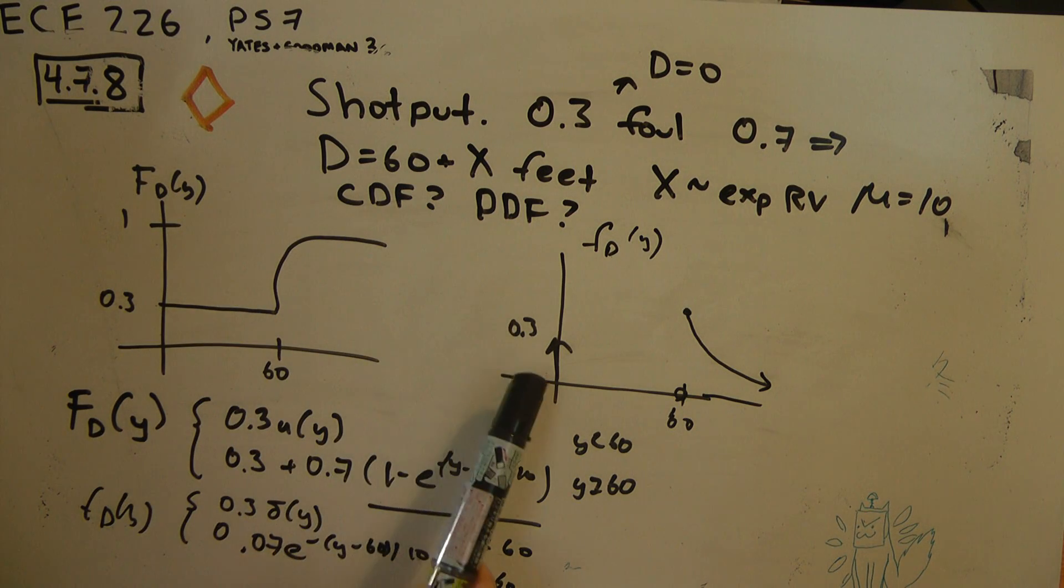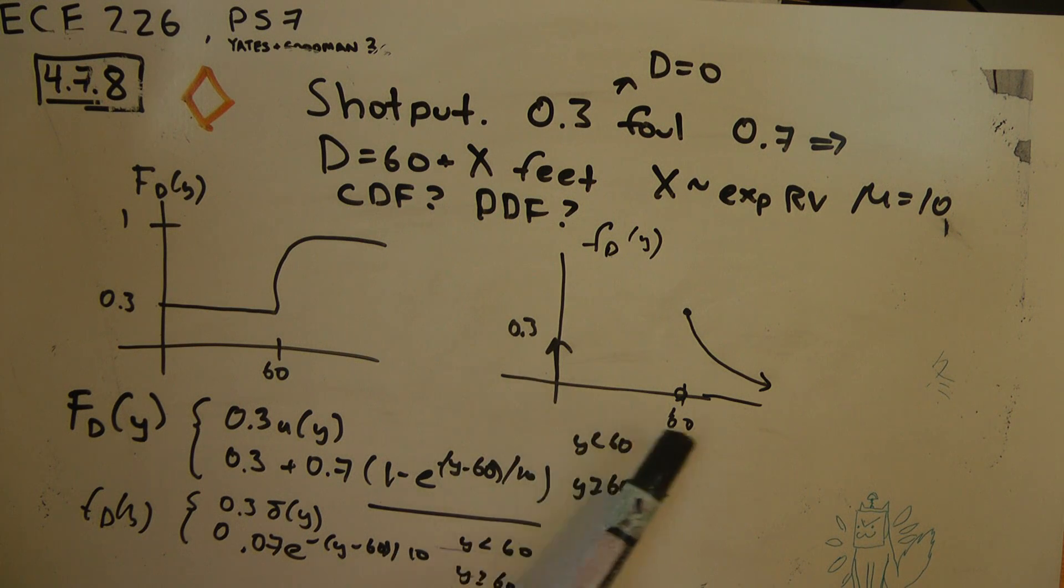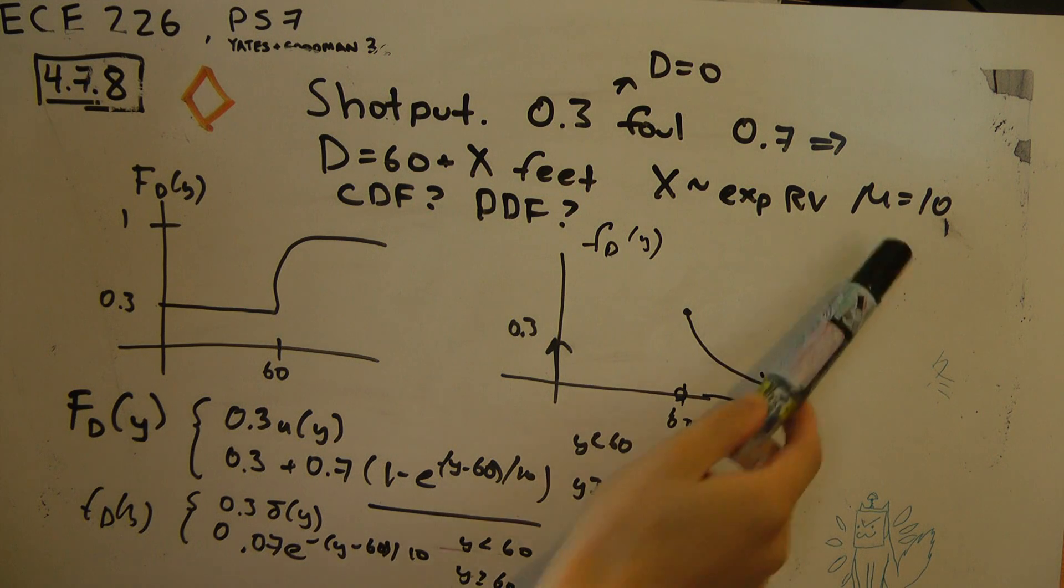And then the PDF will have a slight impulse at 0 and then you see the exponential PDF at 60 with a mean of 10.